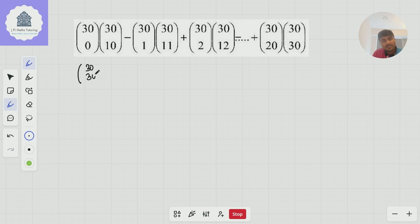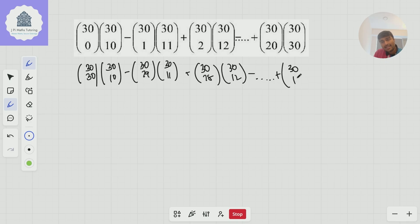So I could write this as 30 choose 30 times 30 choose 10, minus 30 choose 29 times 30 choose 11, plus 30 choose 28 times 30 choose 12, and so on. All the way up to 30 choose 10 times 30 choose 30.